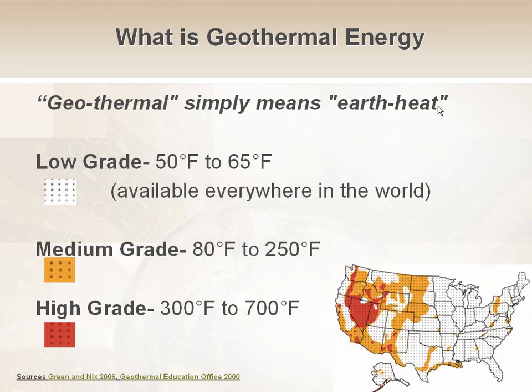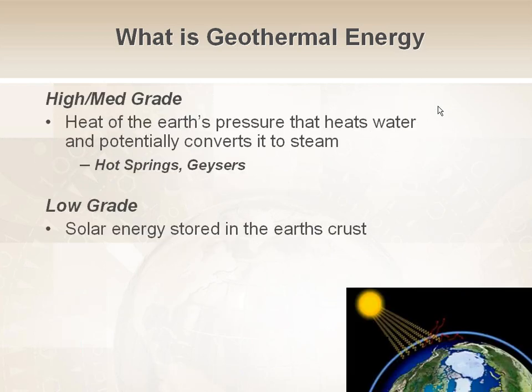If you look at this map, everywhere there are white dots is where geothermal application is available — which is everywhere. Orange is medium-grade and red is high-grade. The high- and medium-grade geothermal energy actually comes from within the Earth — heat generated from tectonic plate pressure or from the core. It heats water within the Earth and sometimes converts it to steam, like geysers. Hot springs and geysers fall under high- or medium-grade geothermal energy.